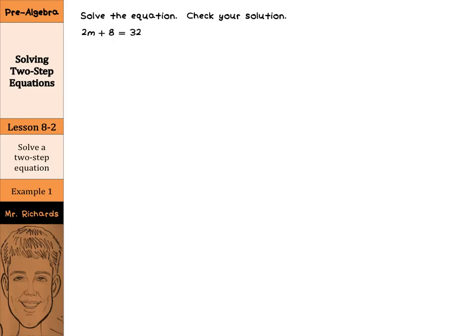Our directions on this first example are to solve the equation and check your solution. So we have 2m plus 8 equals 32. We need to isolate the m, we need to get the m alone, and our first step here is going to be to get rid of this plus 8. So we're going to do that by doing the opposite of plus. We're going to subtract 8 from both sides.